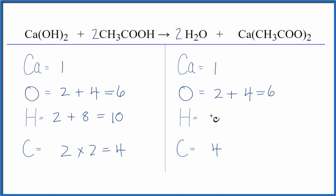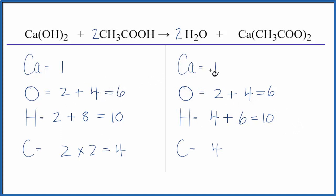Hydrogens: two times two, that's four, plus two times three, that's six — giving me ten. And this equation is balanced. Really, the key to balancing this equation is making sure you get your math right as you add up all of these different atoms. This is Dr. B with the balanced equation for Ca(OH)2 plus CH3COOH. Thanks for watching.